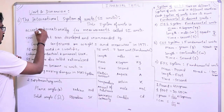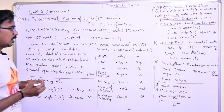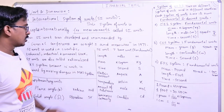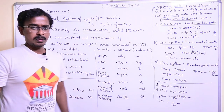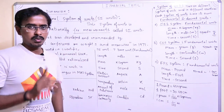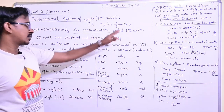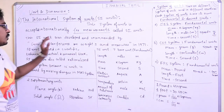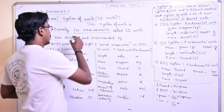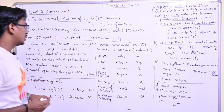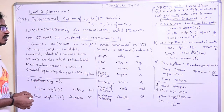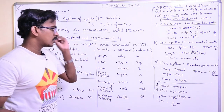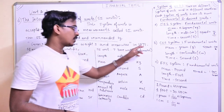This system of units is accepted internationally for measurements. We call it SI units. This system of units was developed and recommended by the General Conference on Weights and Measures in 1971.